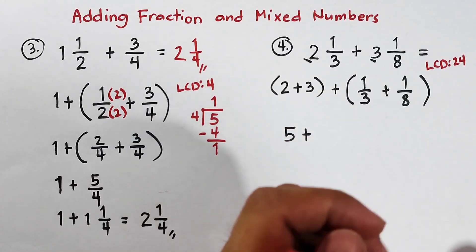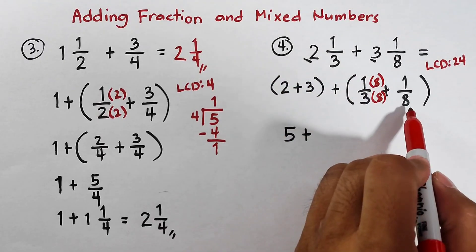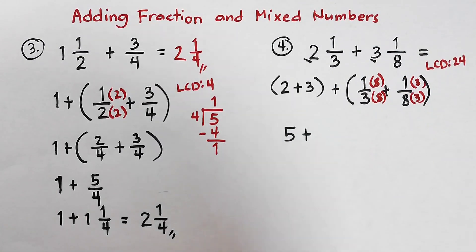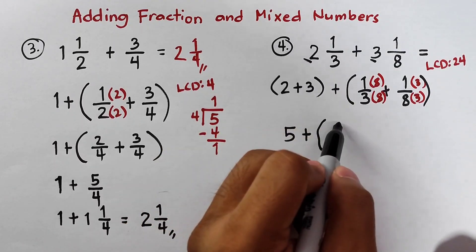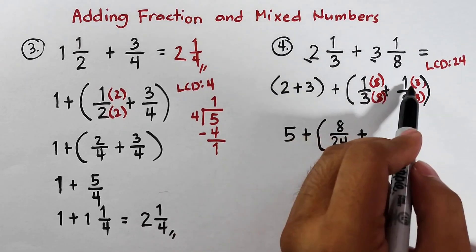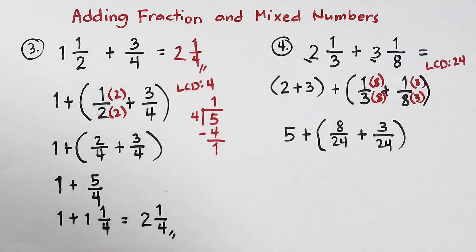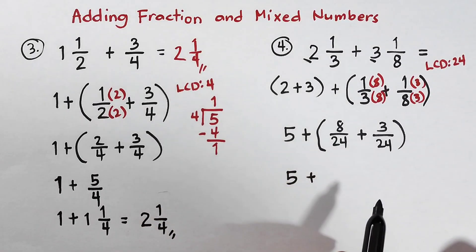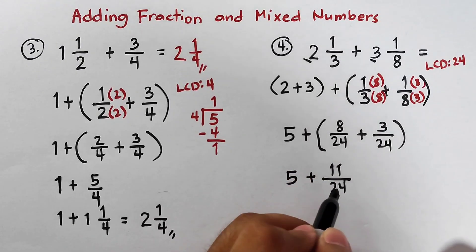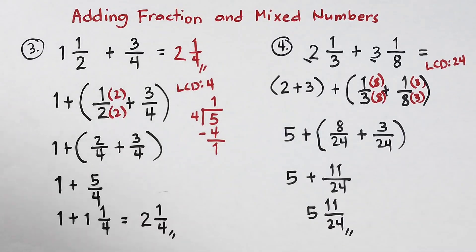What do we multiply by 3 to make 24? That's 8. And for 1 over 8, we multiply by 3. So: 1 times 8 is 8 over 3 times 8 which is 24, plus 1 times 3 is 3 over 8 times 3 which is 24. Copy the 5, then add the numerators: 8 plus 3 is 11, over the common denominator 24. Combining gives 5 and 11 over 24. This is the answer.